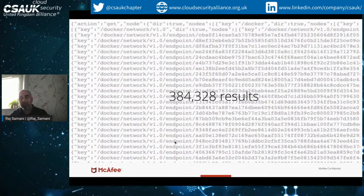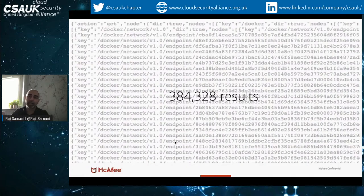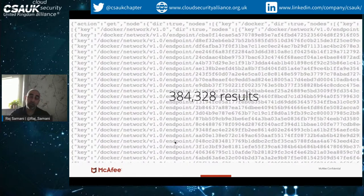Security departments in the past just had to look after assets inside their network. Now you've got to start looking at repositories on GitHub, even things such as whether executives are communicating with threat actors on platforms like LinkedIn. That has made the environment a lot harder. And yes, it is the customer's fault — but it is now perhaps also the security department's responsibility to start looking at repositories like GitHub.